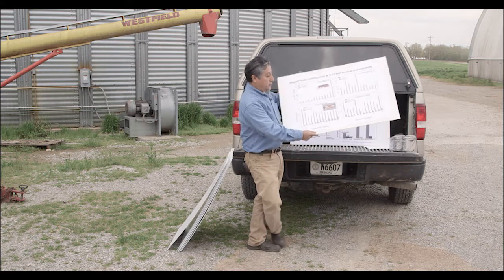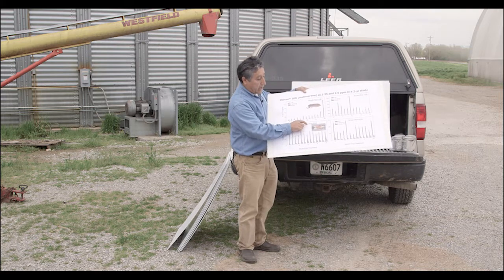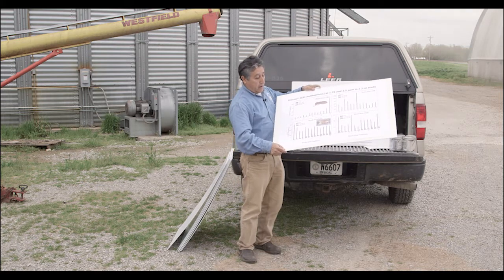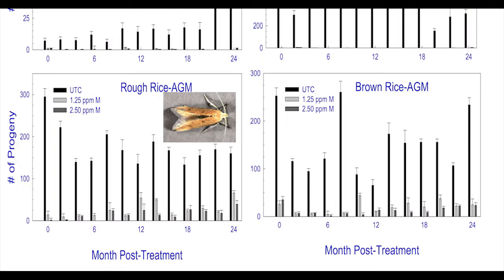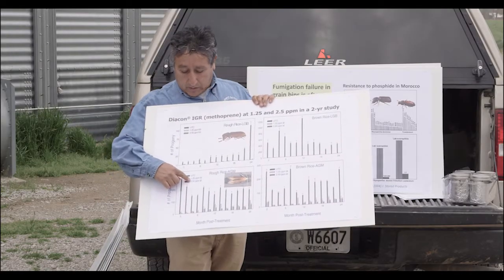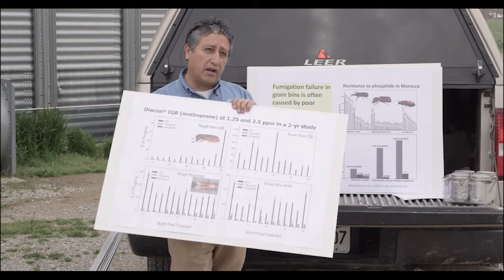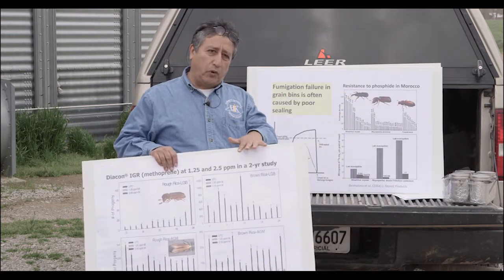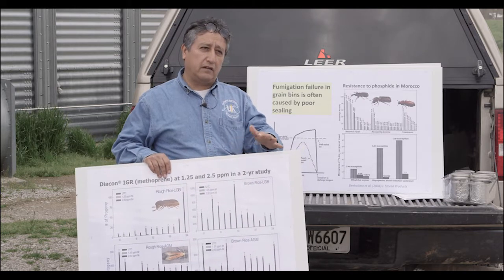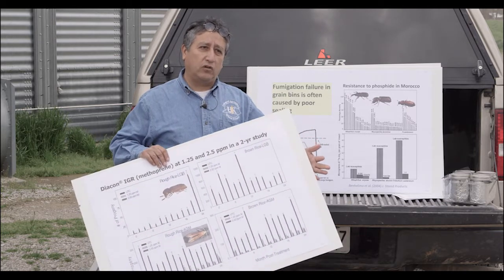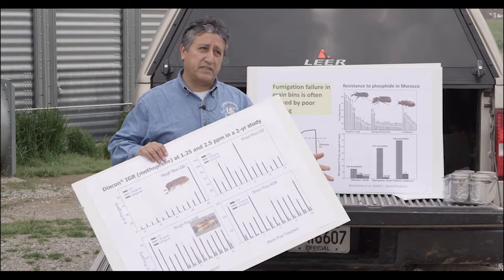For the Angoumois grain moth there are very similar results. The black line is the untreated control with more abundant moth numbers, whereas the rates of 1.10, 1.25, and 2.5 parts per million have lower numbers. This is a product that in most cases insects don't develop too much resistance to.